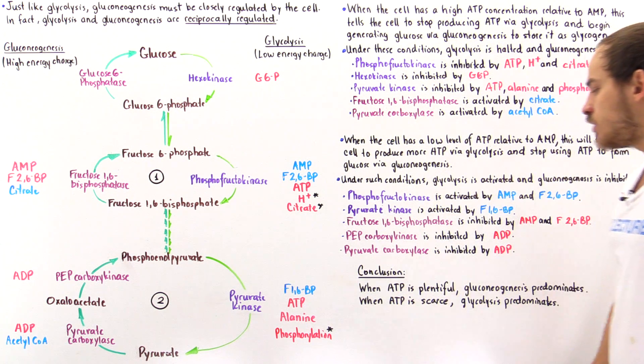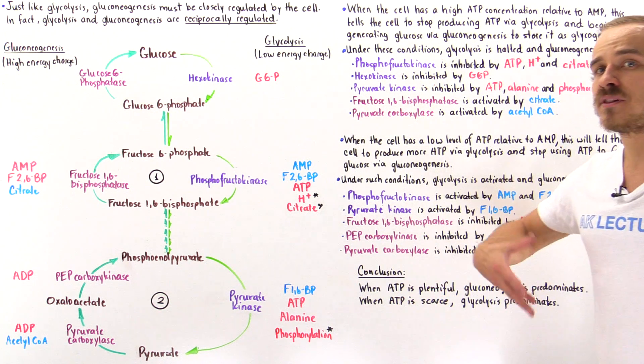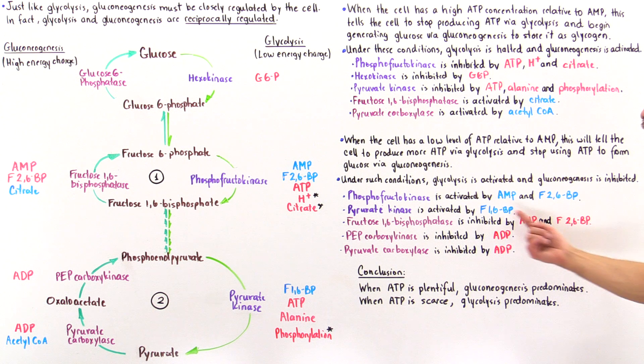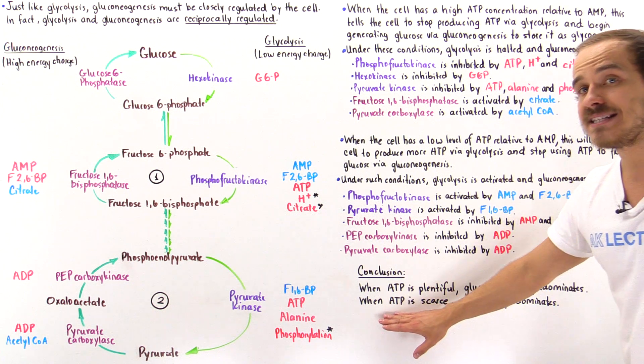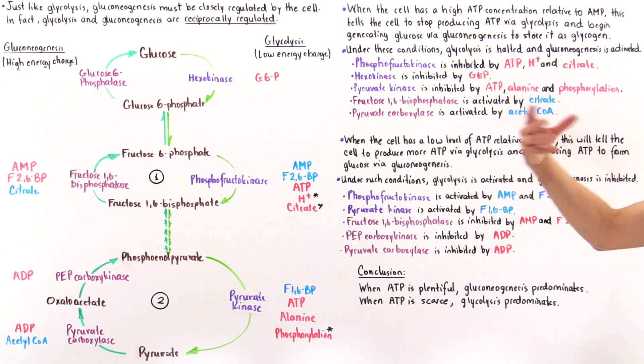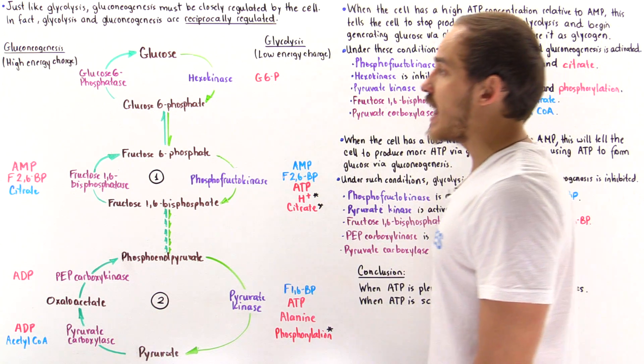And so we conclude that when ATP is plentiful in the cell, the gluconeogenic process predominates, while when ATP is scarce, glycolysis is the process that predominates.